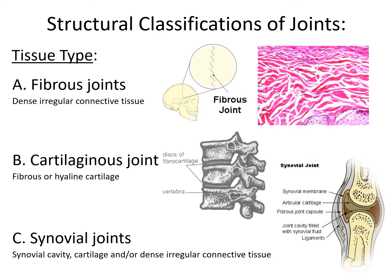Now let's look at the structural classification, based on what's connecting the bones together. We have fibrous joints held together by dense irregular connective tissue — these can be synarthroses or in some cases amphiarthroses. Next we have cartilaginous joints where fibrous or hyaline cartilage connects two bones — these are often amphiarthroses. Finally we have synovial joints, defined by a synovial cavity filled with synovial fluid, which is very slippery and allows for lots of movement. These are all diarthritic joints.